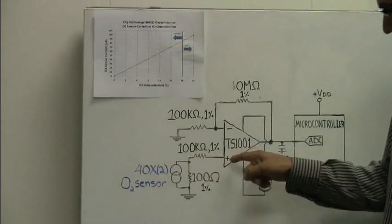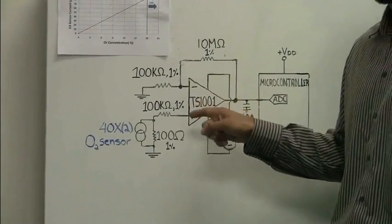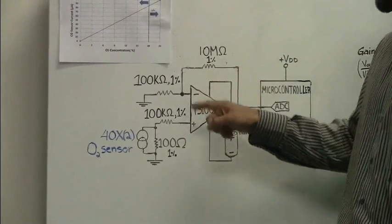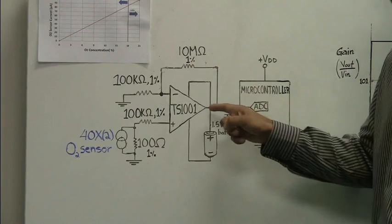The input is applied to the non-inverting input of the TS-1001. Because the input is in the millivolts range, the circuit is set up in a non-inverting scheme with a gain of 101.